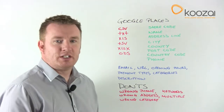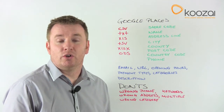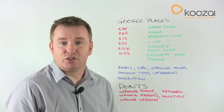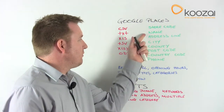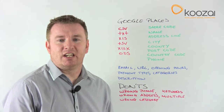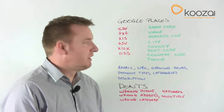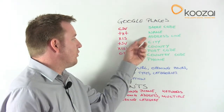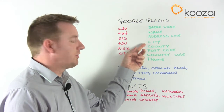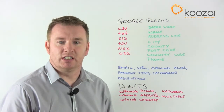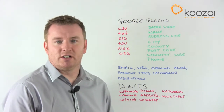The store code can be anything you want — it can be store one, store two, or a location such as Hampshire one, Hampshire two, however you want to play it. The name should be the company name; don't try to add any keywords, just have it as your company name. For the address, make sure you've got the full address included — you can add address lines one, two, or three. City, county, and postcode are self-explanatory.